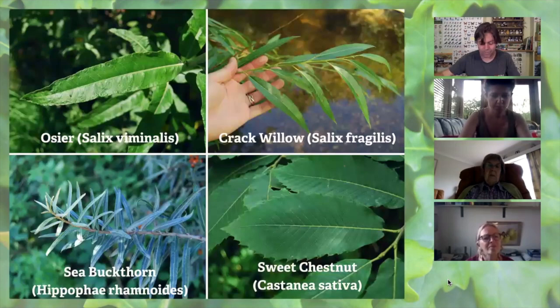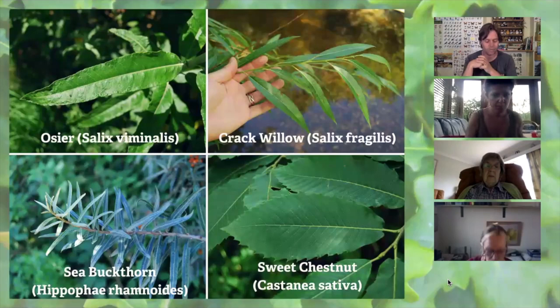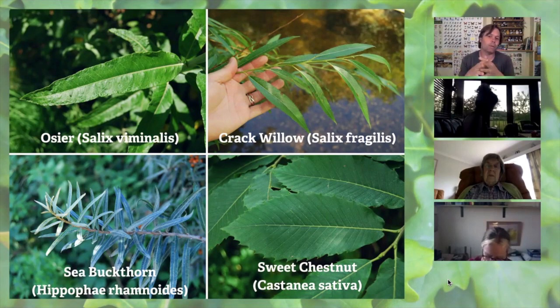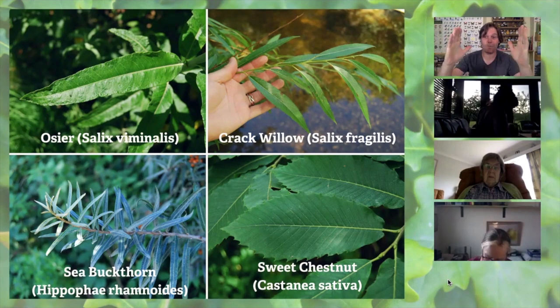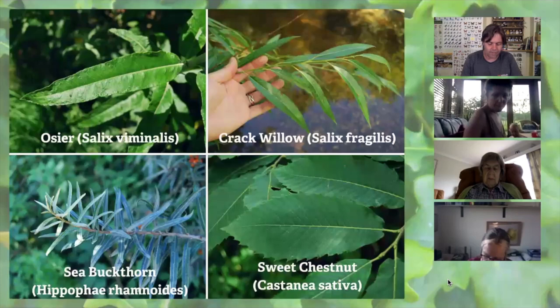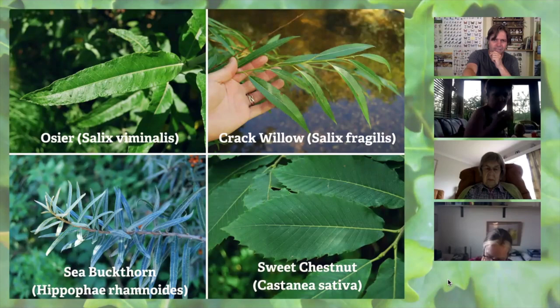Long and narrow leaves — mostly willows. White willow, crack willow, and osier all have long, narrow, pointed leaves. But 'long and narrow' doesn't mean large in size — it just means much longer than wide. Sea buckthorn has long narrow leaves that are really quite small, while sweet chestnut has long narrow leaves that can be very large. Generally, if you're seeing a long and narrow leaf, it's probably a willow about eight times out of ten.